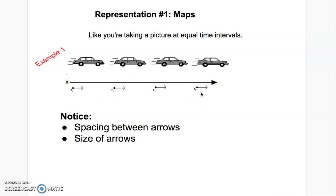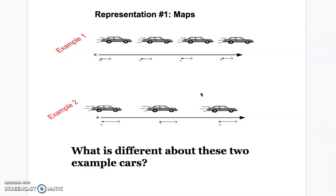So let's compare this to another motion map. So again, here I have both the motion map and the picture of the object. Take a moment, and what's different? Think about what's different about these two example cars.